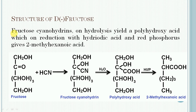If glucose is treated with hydrogen cyanide, it gives a cyanohydrin. On hydrolysis of these cyanohydrins, polyhydroxy acids are yielded, which on reduction with hydroiodic acid in the presence of red phosphorus finally give 2-methylhexanoic acid. This reaction confirms that the 6 carbon atoms in fructose form a straight chain and the keto group is on the second carbon atom from one end.